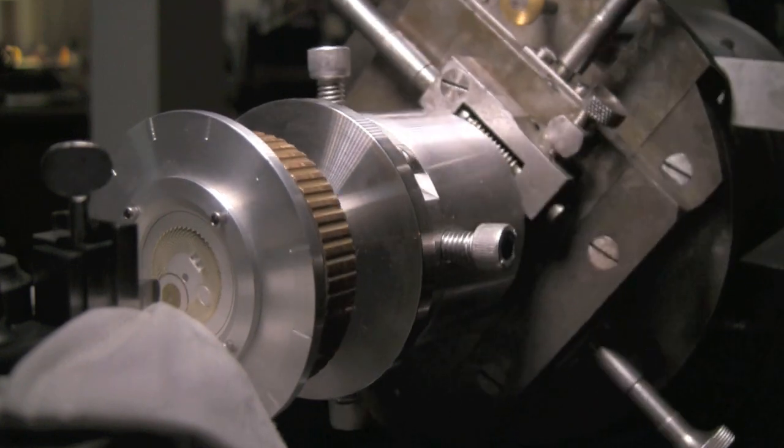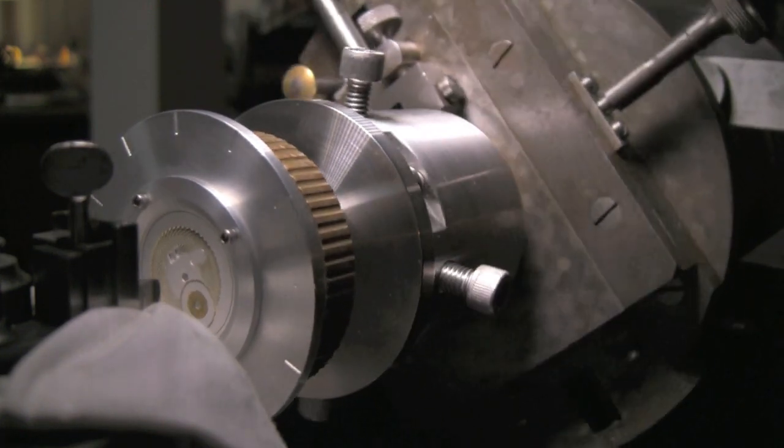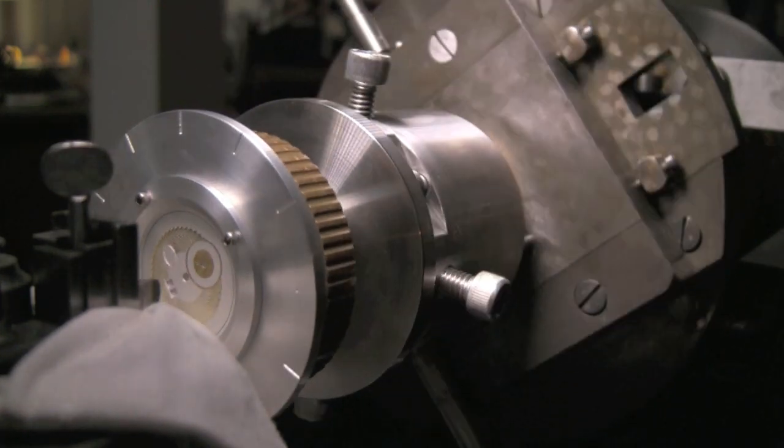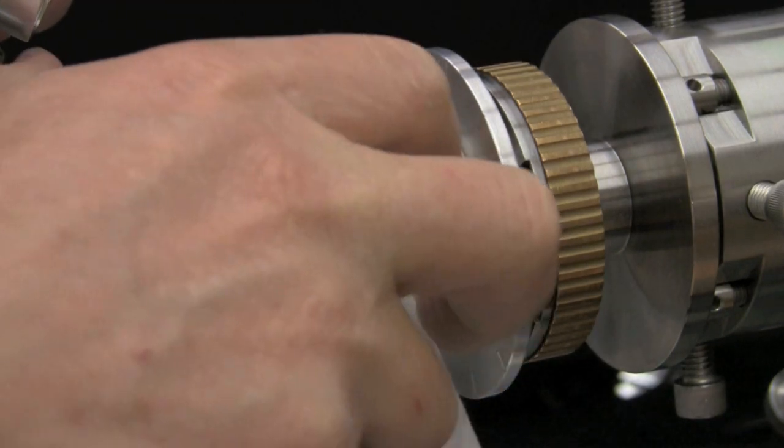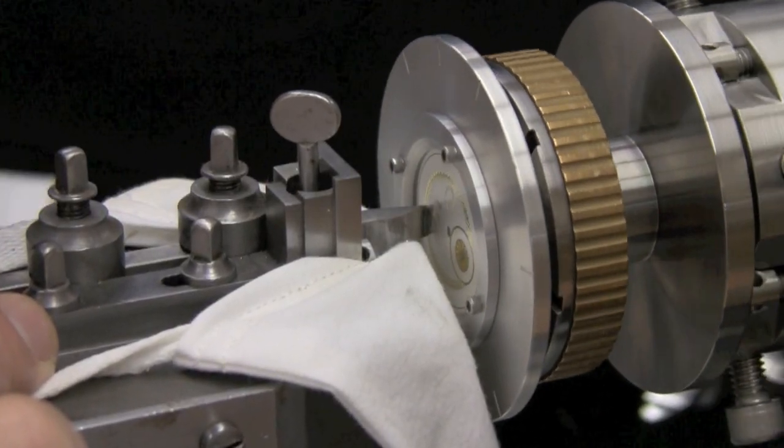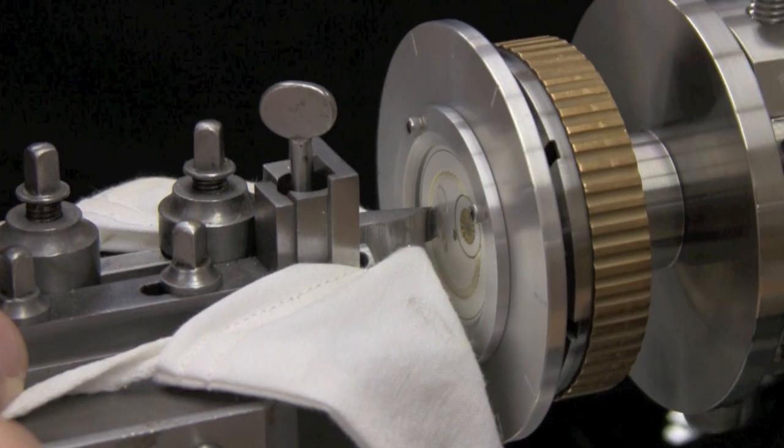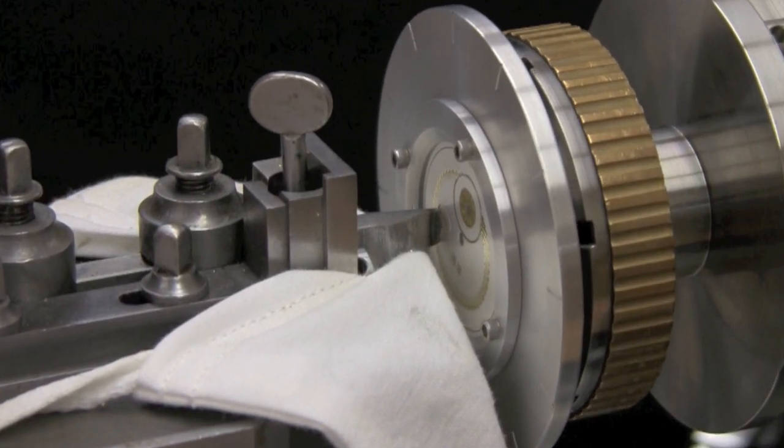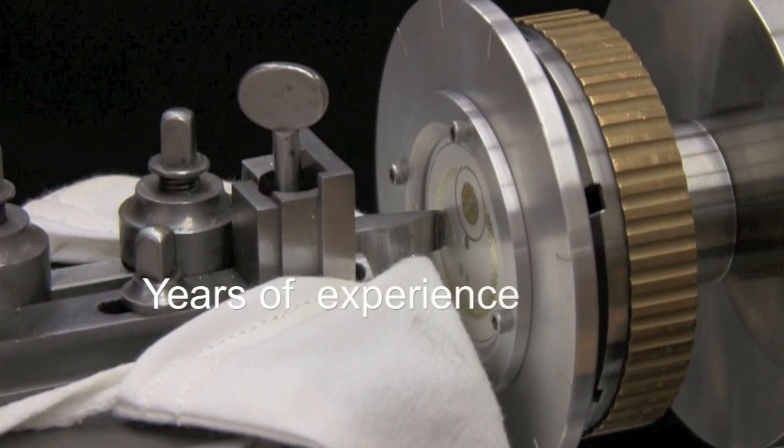When you're using the machine, when you're actually doing the cutting, you want to keep things consistent. So normally the speed of cranking is fairly consistent, the pressure on the cutter is consistent. You want to make sure that there's no big deviations that could show up in the work itself.